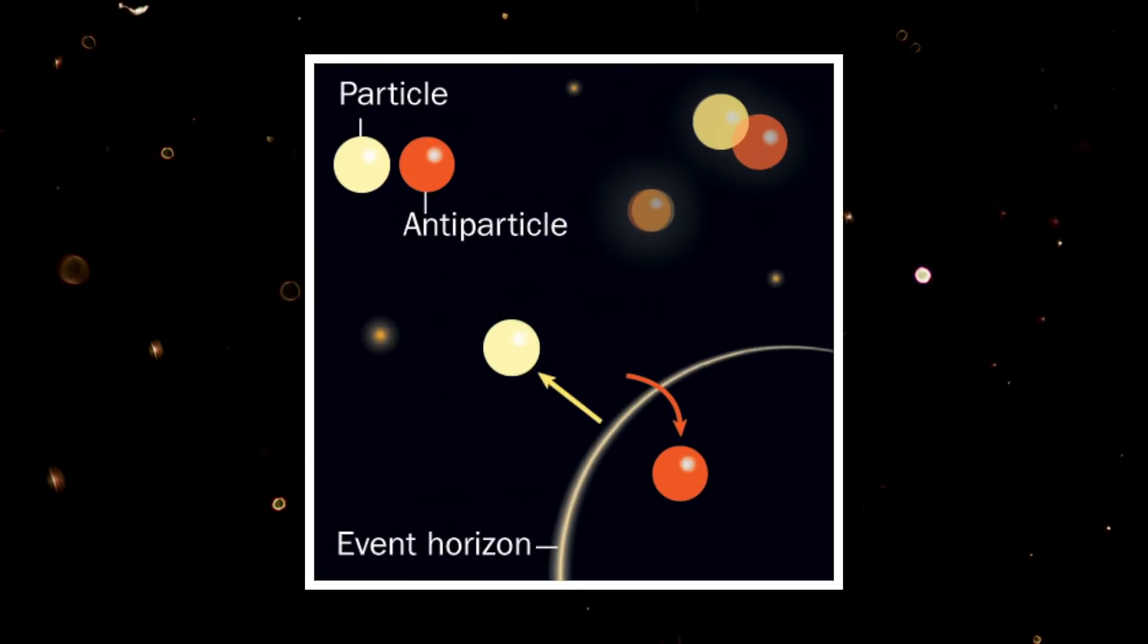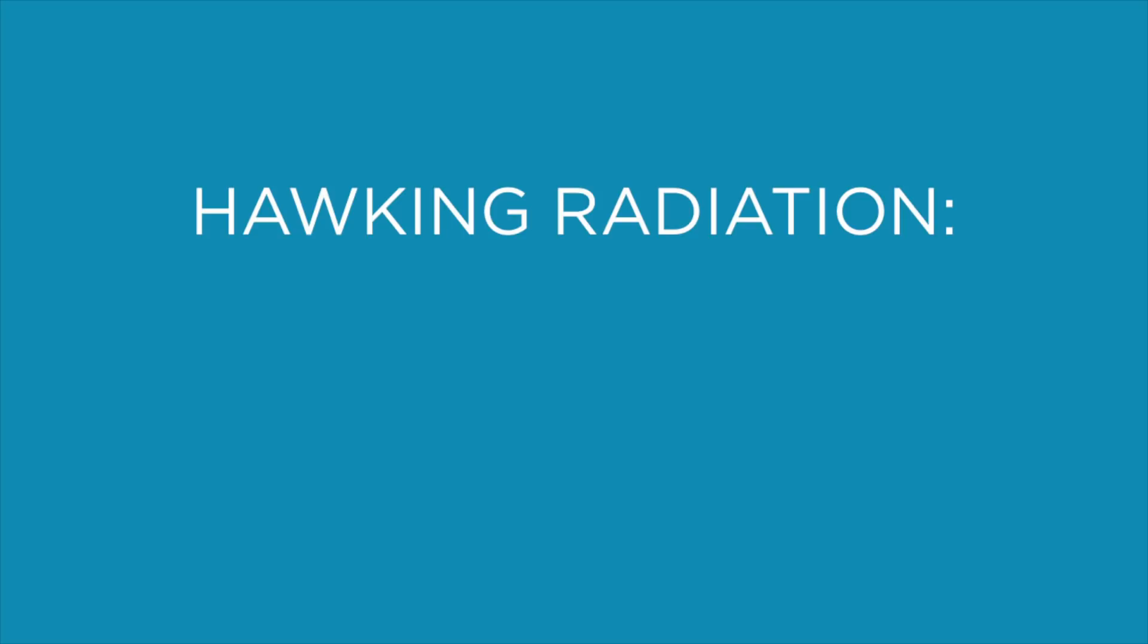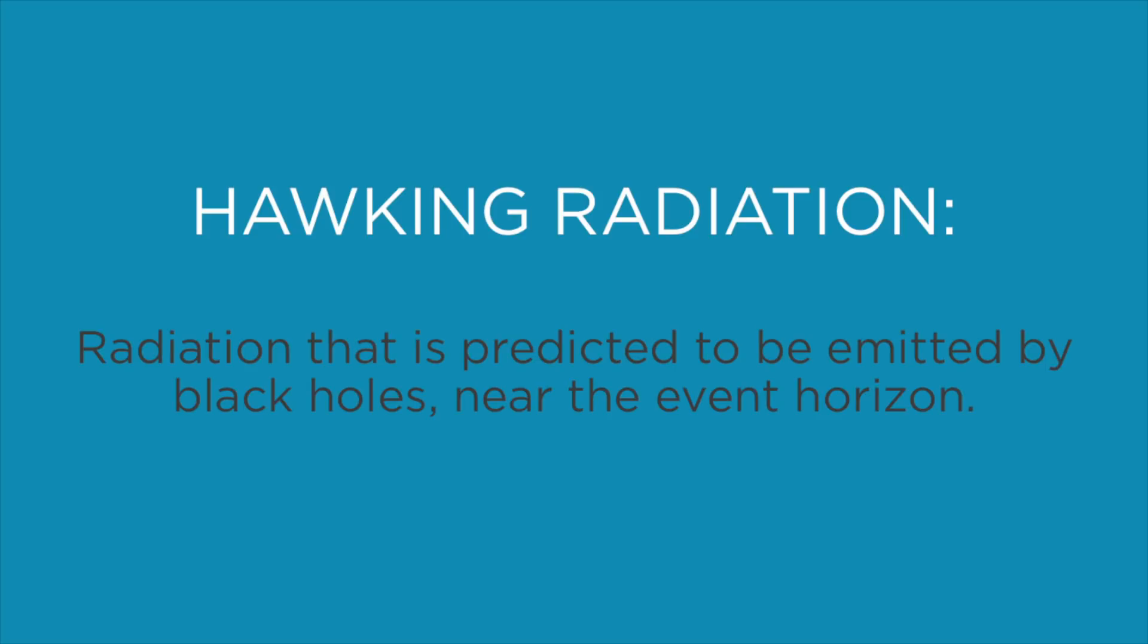Now if you have one of these particle pairs pop into existence at the event horizon, one particle will fall into the black hole but the other particle is able to escape into space and become an actual particle. And when particles escape the black hole loses a small amount of its energy and therefore some of its mass because mass and energy are related by Einstein's equation E equals mc squared. As I said this is called Hawking radiation.